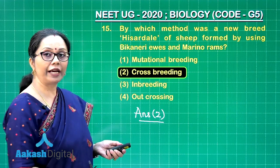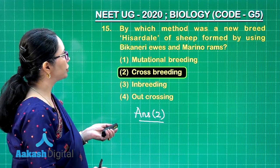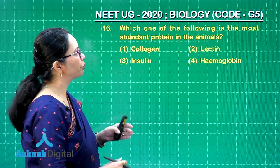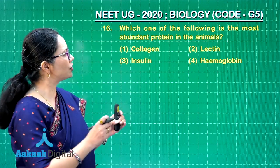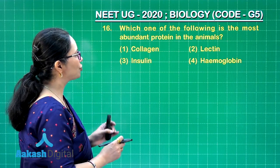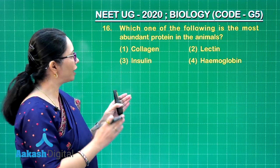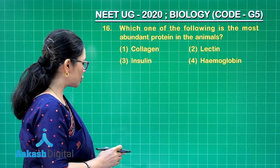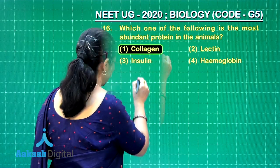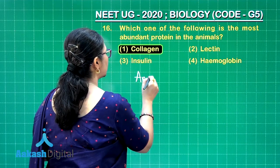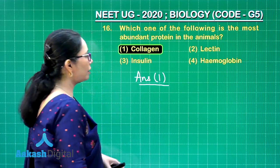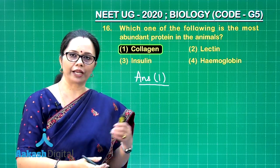Question 16: Which of the following is the most abundant protein in animals? This is a direct textbook question from biomolecules. The most abundant protein in the animal world is collagen, so that is the correct answer.